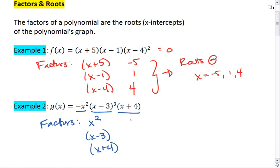Thus, if x is 0, 3, or -4, then the output is 0. Meaning we have roots at x = -4, 0, and 3.